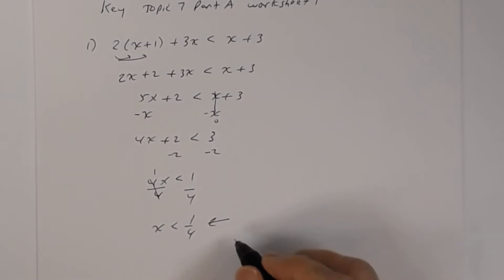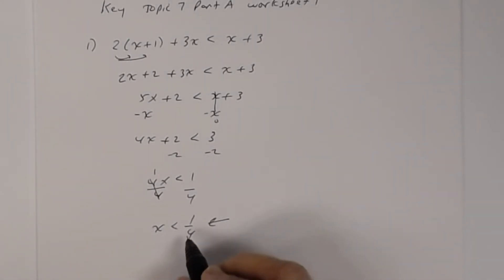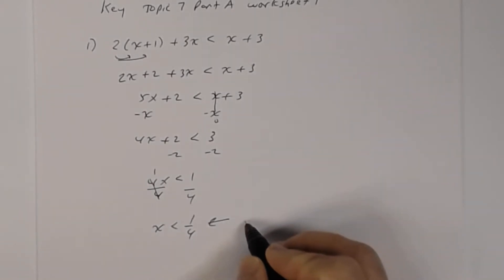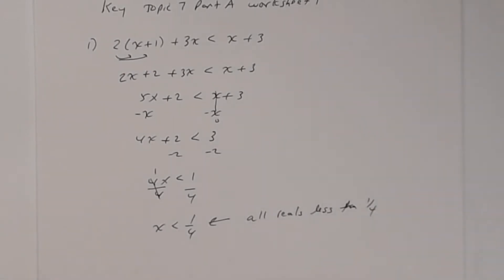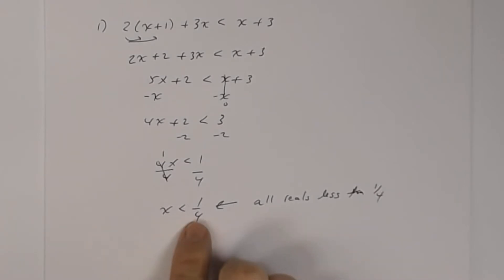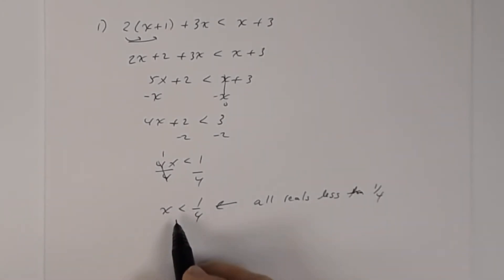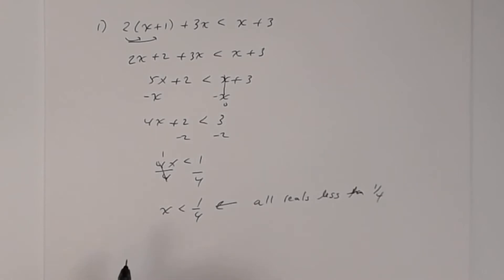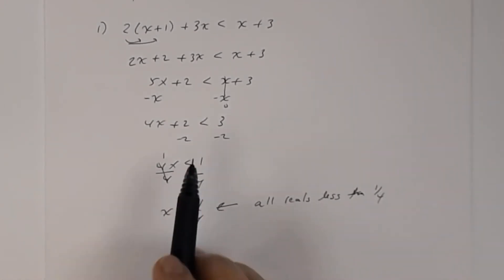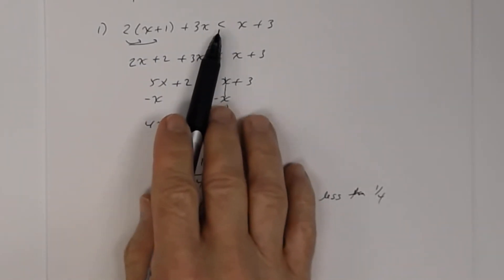This indicates what the solutions are: any real number less than 1/4. There are an infinite number — 0, 1/5, negative 8.2, negative 17 are all solutions. Notice there's no equal sign, so 1/4 is not a solution. If you substitute 1/4 into the original problem, the left side will not be less than the right side.